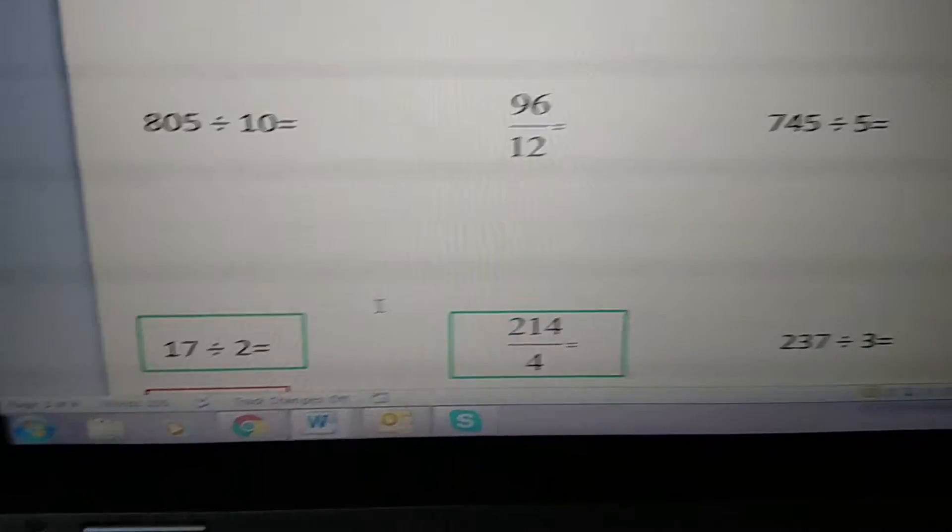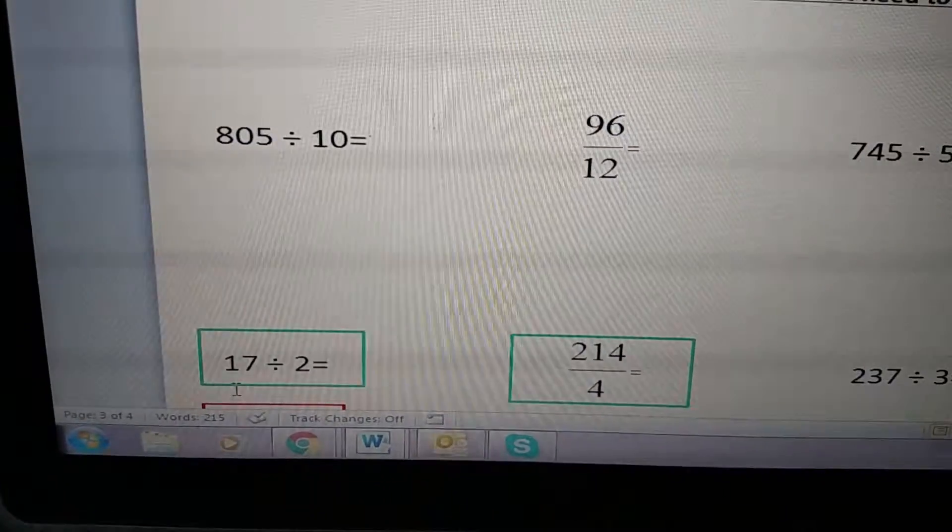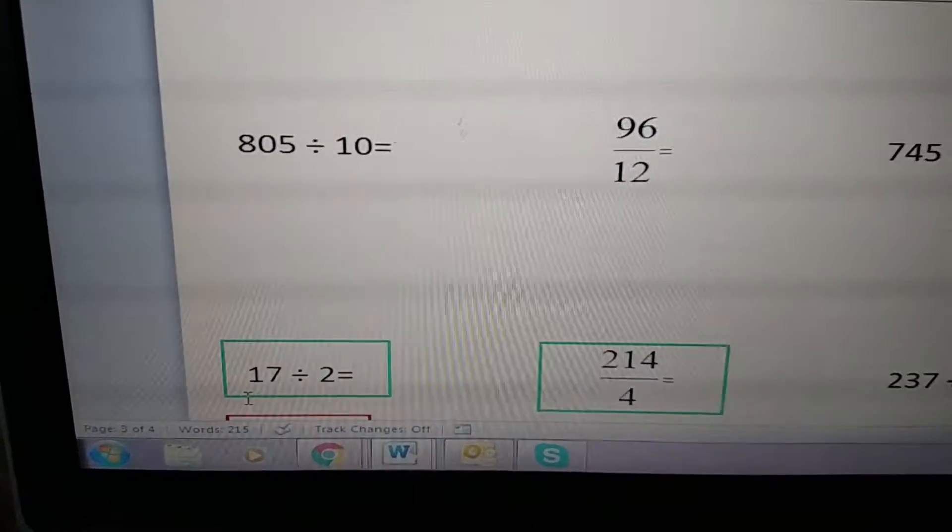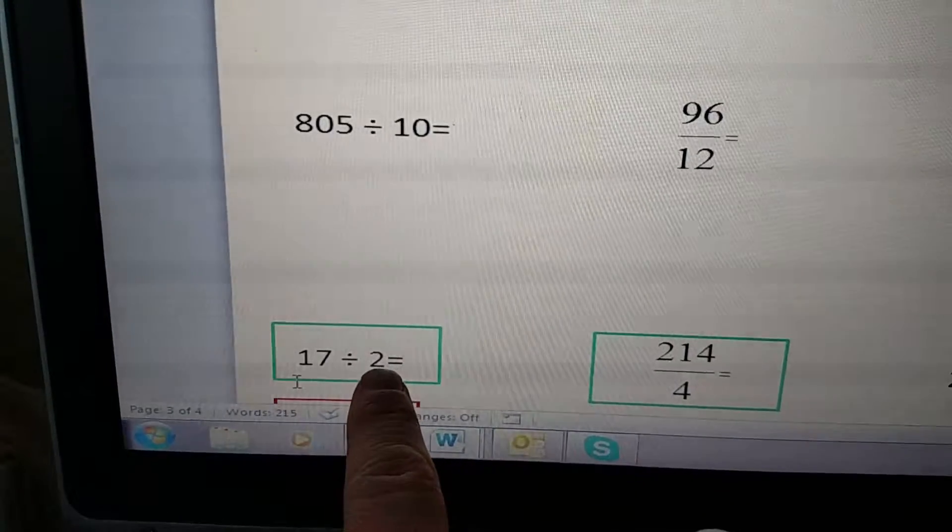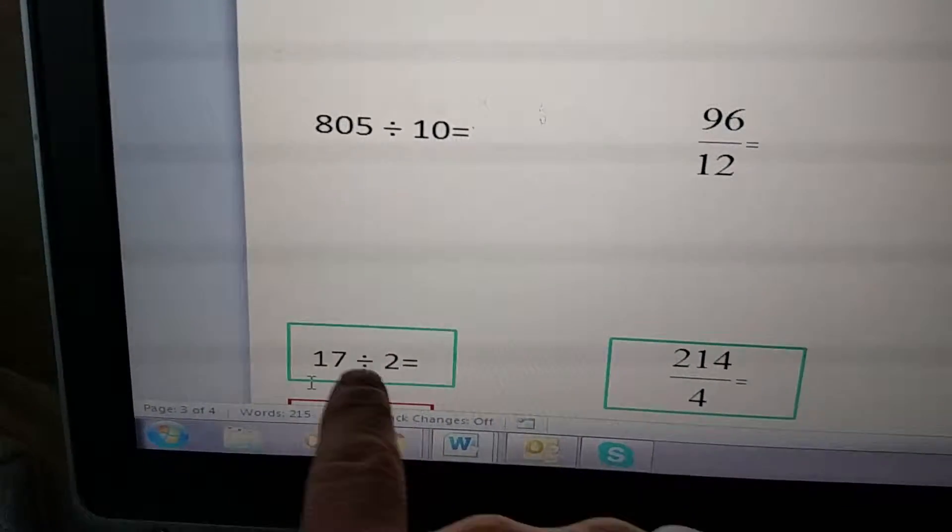Here, my mouse is pointing to 17 divided by 2. What we need to know is that this 2 is your divisor, the second number in your sequence.